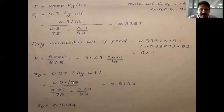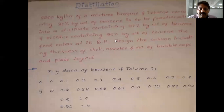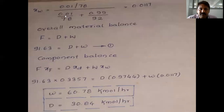The top product composition xD is also given in weight percent. Benzene is the more volatile component. Converting: xD = (0.97/78) / (0.97/78 + 0.03/92) = 0.9744. For the bottoms xW, the residue contains 99 percent toluene, so 1 percent benzene remains. Therefore xW = (0.01/78) / (0.01/78 + 0.99/92) = 0.0117.